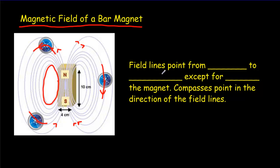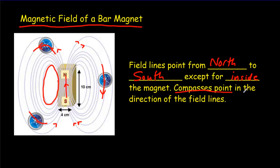Field lines always point from north pole to south — outside the magnet. Be a little careful though: inside the magnet, if these are continuous loops, the field lines are pointing from south to north. And compasses always point in the direction of the field lines.